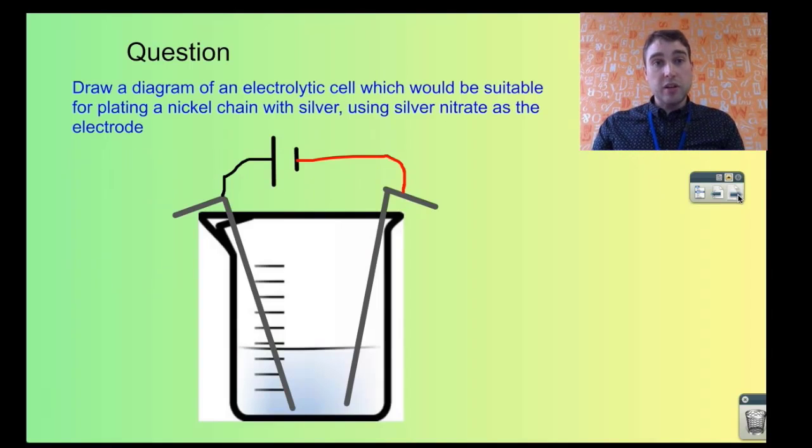Another question says, draw a diagram of an electrolytic cell which would be suitable for plating a nickel chain with silver using silver nitrate as the electrode. So I've got to set up one over here, let's label this.